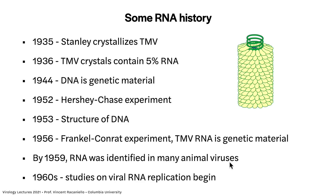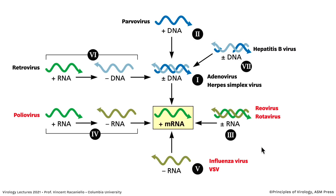In the 1960s, people asked: how does this RNA reproduce? That's the topic of today's discussion. We're going to talk about three different kinds of RNA-containing viruses: Class 3 with double-stranded RNA, Class 5 with negative-strand RNA, and Class 4 with plus RNA. Class 6 — plus RNA with a DNA intermediate — we'll reserve for another lecture.